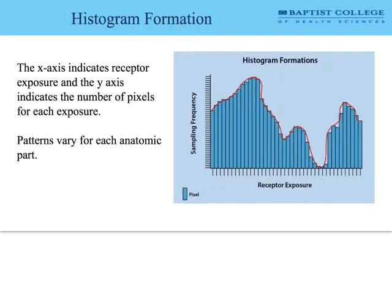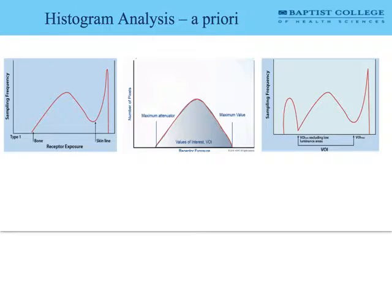During data acquisition, the histogram is the value distribution of the quantized data. I've represented it graphically here for clarity, but understand the computer is not looking at a graphic — it's looking at a table, and that's how it actually processes this data. There are two basic formats the computer uses to analyze histograms and produce images. The first is a priori histogram analysis, which has three basic types.